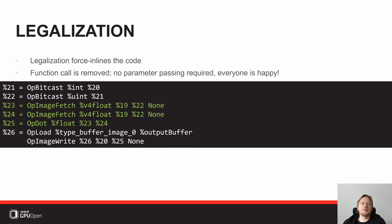So what the front-end has to do is legalize this code and make it something supported and valid for the target environment. In this case the only way to do it is to eliminate the whole buffer passing by inlining the function call completely into the caller. Now you don't have a buffer passing around anymore, so that makes the function legal. But at the same time it removes semantic information — previously you knew you were calling a function.